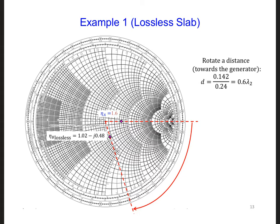Next, we're going to rotate a distance d towards the generator, so in this direction. And we need to find d in terms of wavelength, so we're told d is 0.142 meters. So we're going to divide by the wavelength in material 2. And that will give us 0.6 wavelengths.